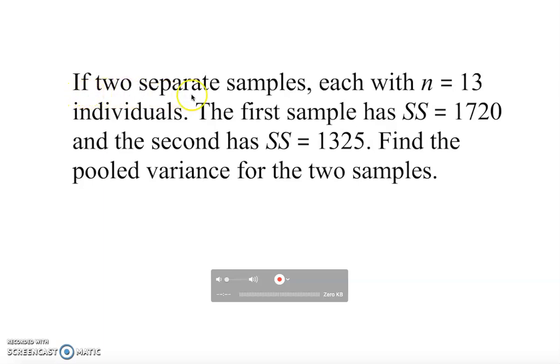Information is given as two separate samples, each with n equal to 13. That means sample size n1 equals 13 and n2 equals 13 individuals. The first sample has SS equals 1720 and the second has SS equals 1325. Find the pooled variance for the two samples.